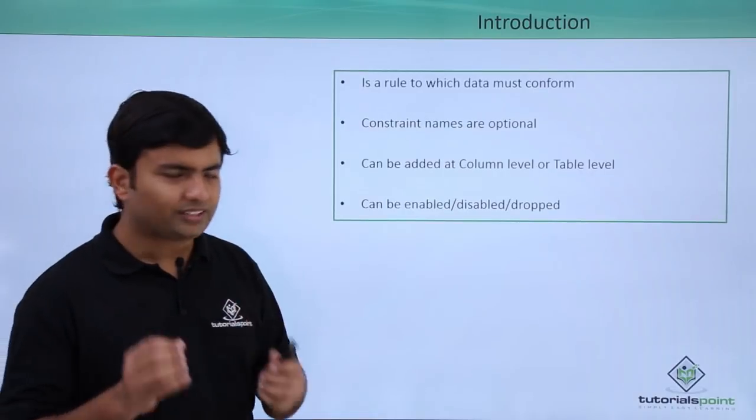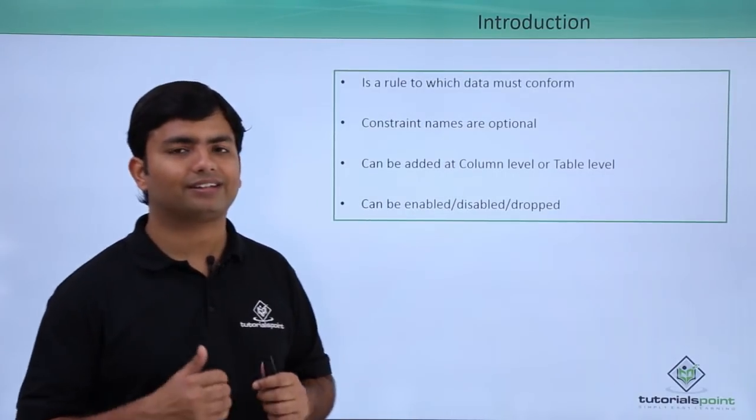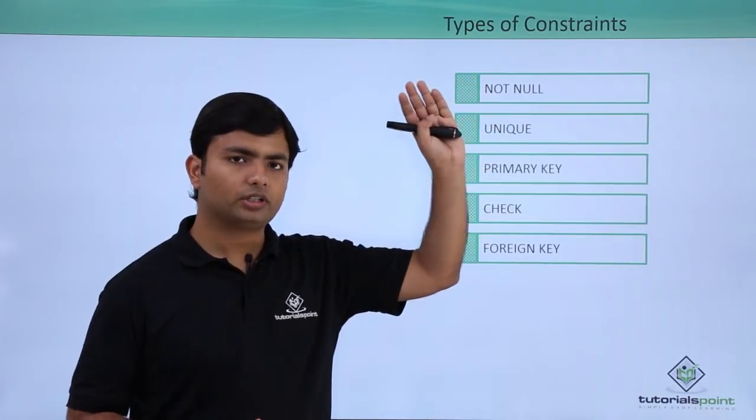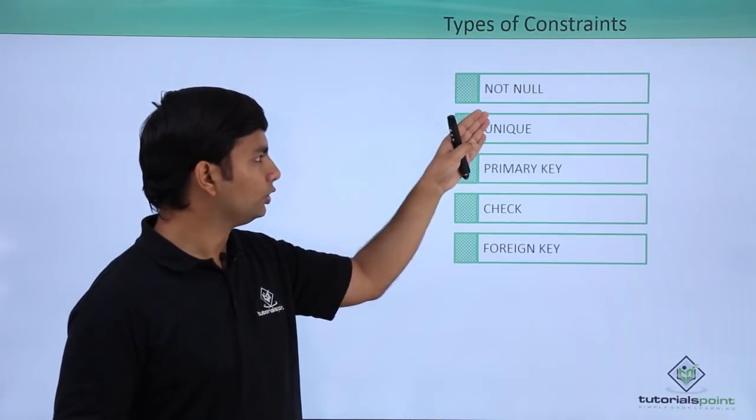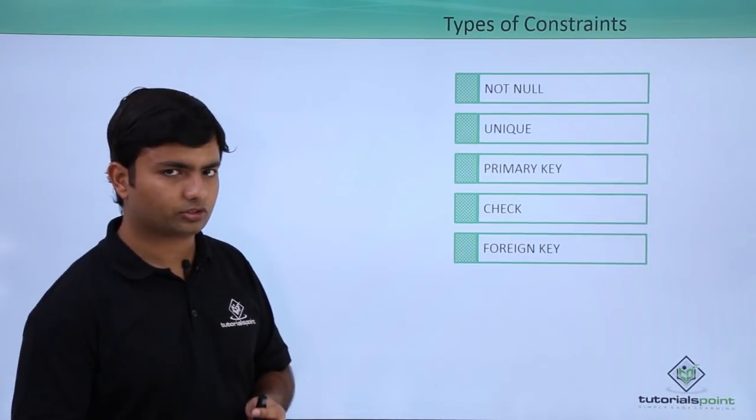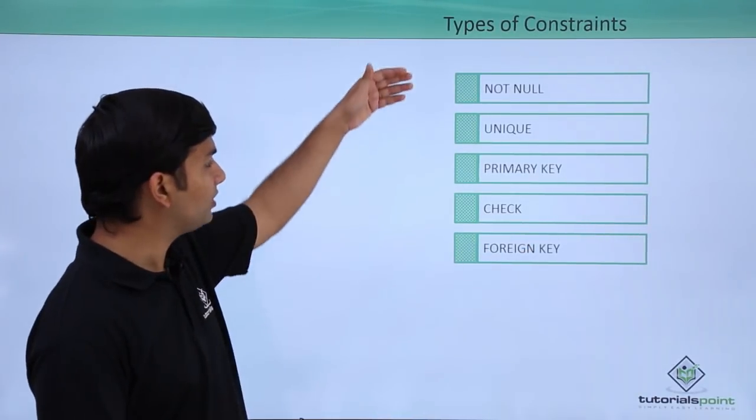So let's see what all constraints are basically available which we can add. So here you can see like NOT NULL, UNIQUE, PRIMARY KEY, CHECK, FOREIGN KEY. These are the major constraints. Let's check them individually.